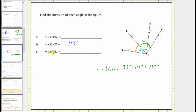Next, let's find the measure of angle MVL. If we focus on the right angle KVM, notice how this tells us that angle MVL and angle LVK are complementary, meaning the sum of their measures must equal 90 degrees. Therefore, the measure of angle MVL must equal 90 degrees minus 39 degrees, which equals 51 degrees.